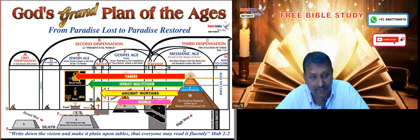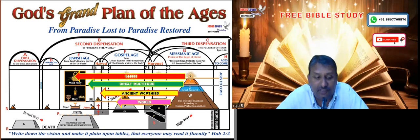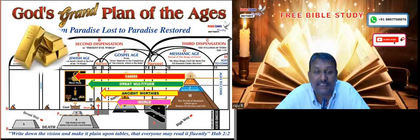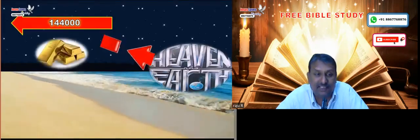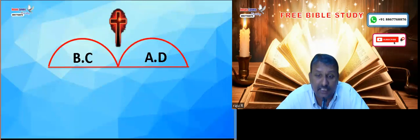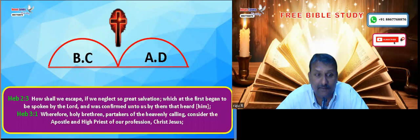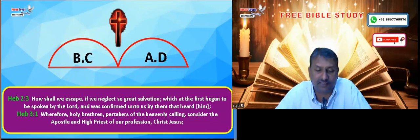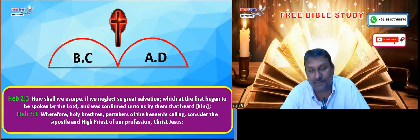Which class of people among these four goes to the divine nature? Is it the world, the ancient worthies, the great multitude, or the 144,000? The 144,000 are the people who go to the divine nature. This is what is signified here — the 144,000 who achieve the first gold prize. This selection started after the coming of our Lord Jesus Christ at his first advent. When he began to preach, he preached about the heavenly salvation.